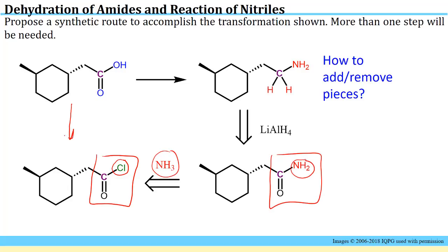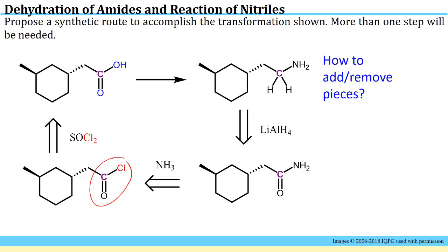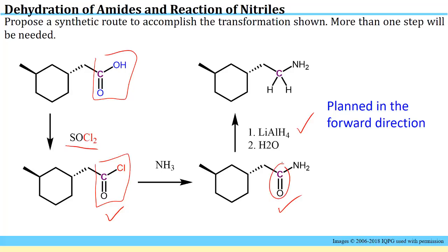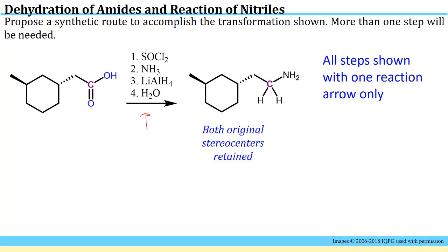All that's left is to figure out how we would undertake the first step: an acid chloride can be made from a carboxylic acid by using thionyl chloride. So in forward direction: take the carboxylic acid, convert to the acid chloride using thionyl chloride, convert that acid chloride into the amide using ammonia, then do the reduction of the amide to the amine by adding those two H's — all drawn as consecutive reaction arrows. We do have two chiral centers in the molecule, but we didn't change any of the bonds to those carbons, so both original stereocenters should be retained in the product.